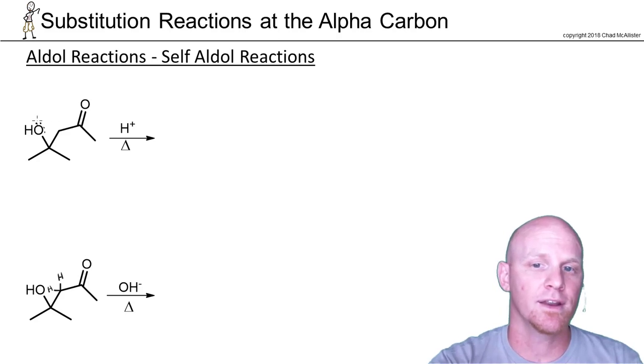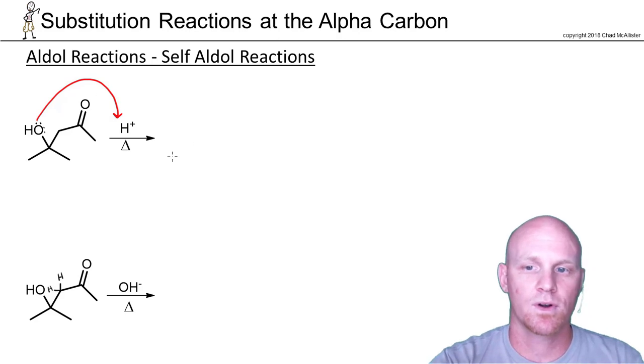But if we protonate it here with whatever our acid is, we can make it a good leaving group. And that's where we're headed here. As has been the pattern, the moment you make something a good leaving group, in all likelihood it is leaving in the next step.